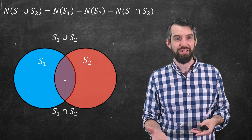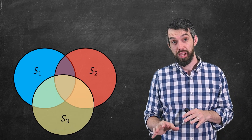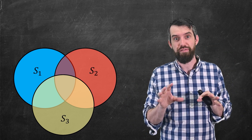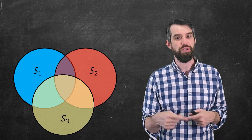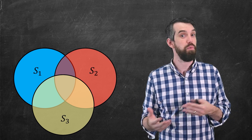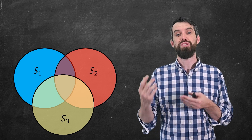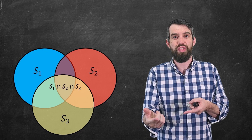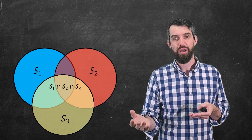That was the double intersection formula. What about the triple intersection problem? I've got S1, S2, and S3, and I'm interested in how many are in the union of all three. There are double intersections — for example, S1 and S2 intersect, S1 and S3, and S2 and S3. And right in the middle is the triple intersection — elements in all three sets simultaneously.